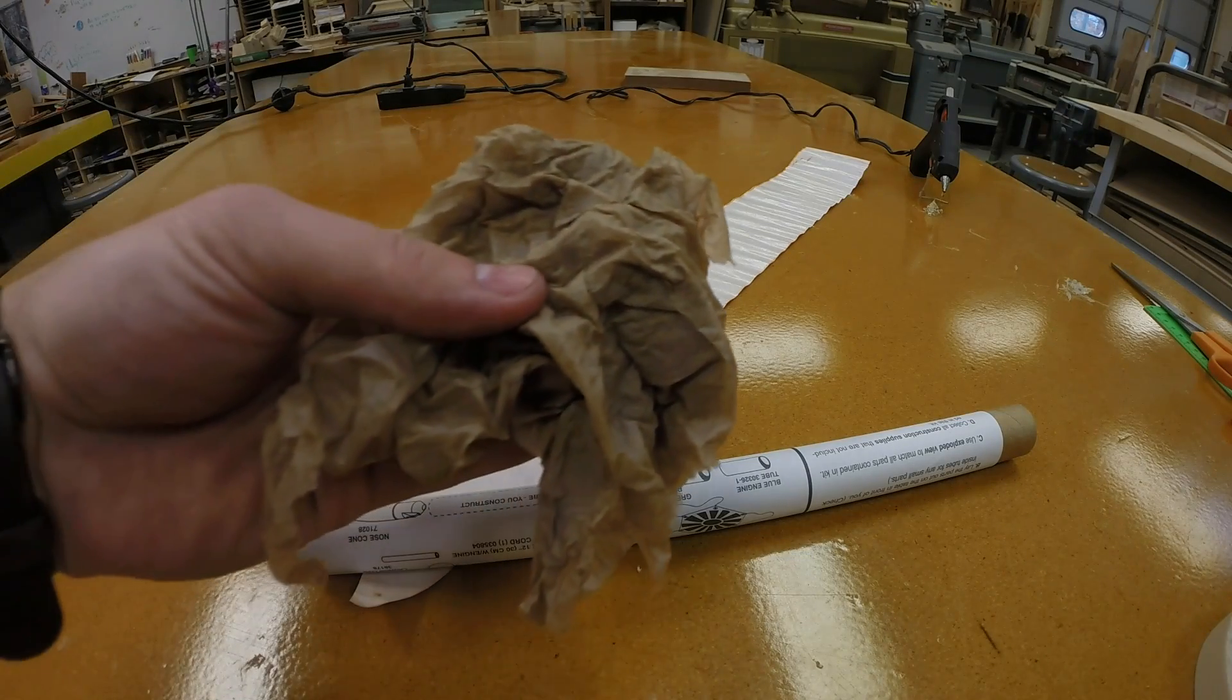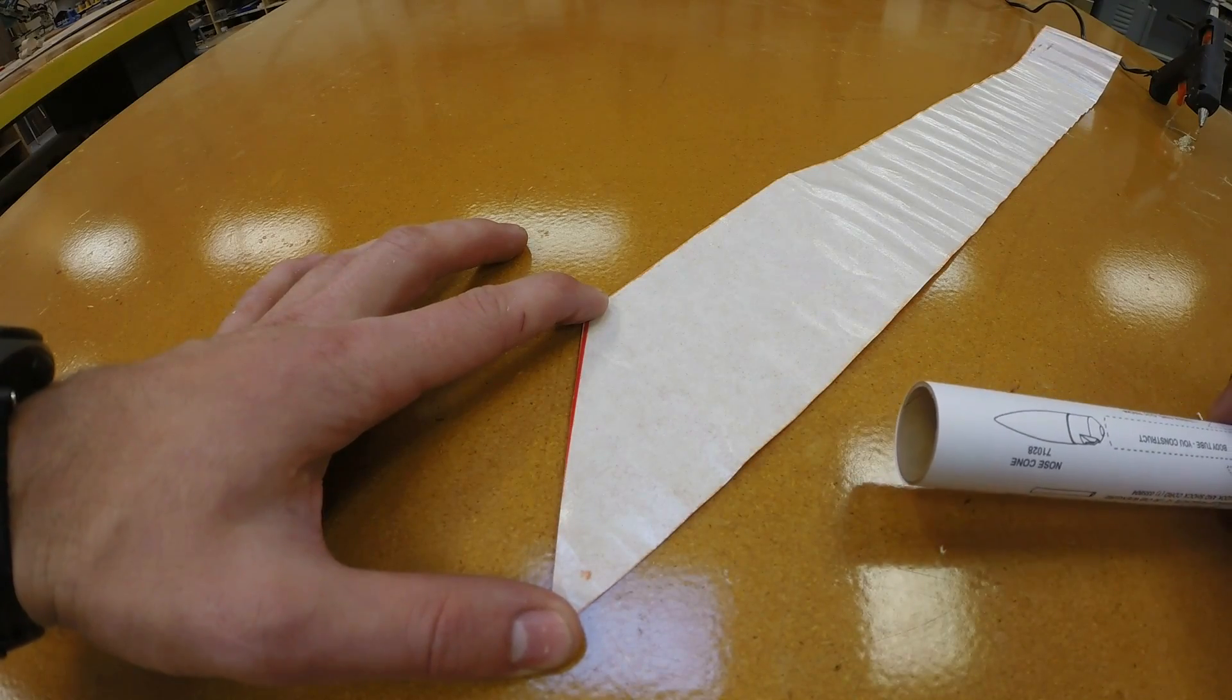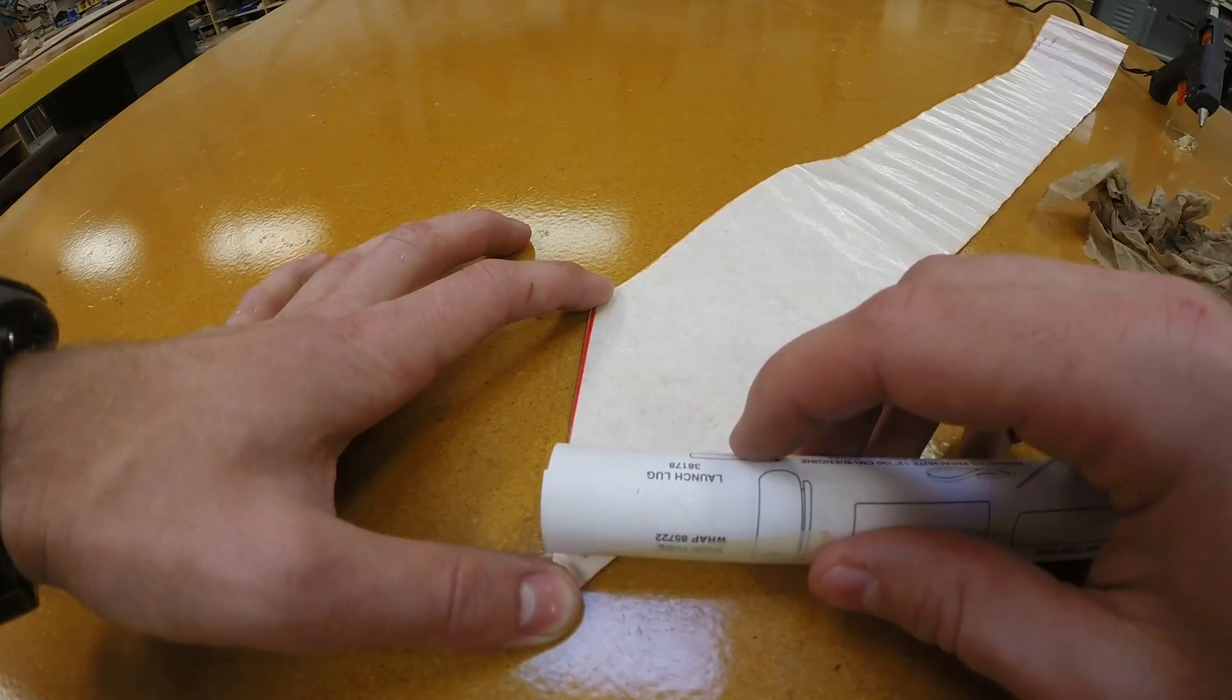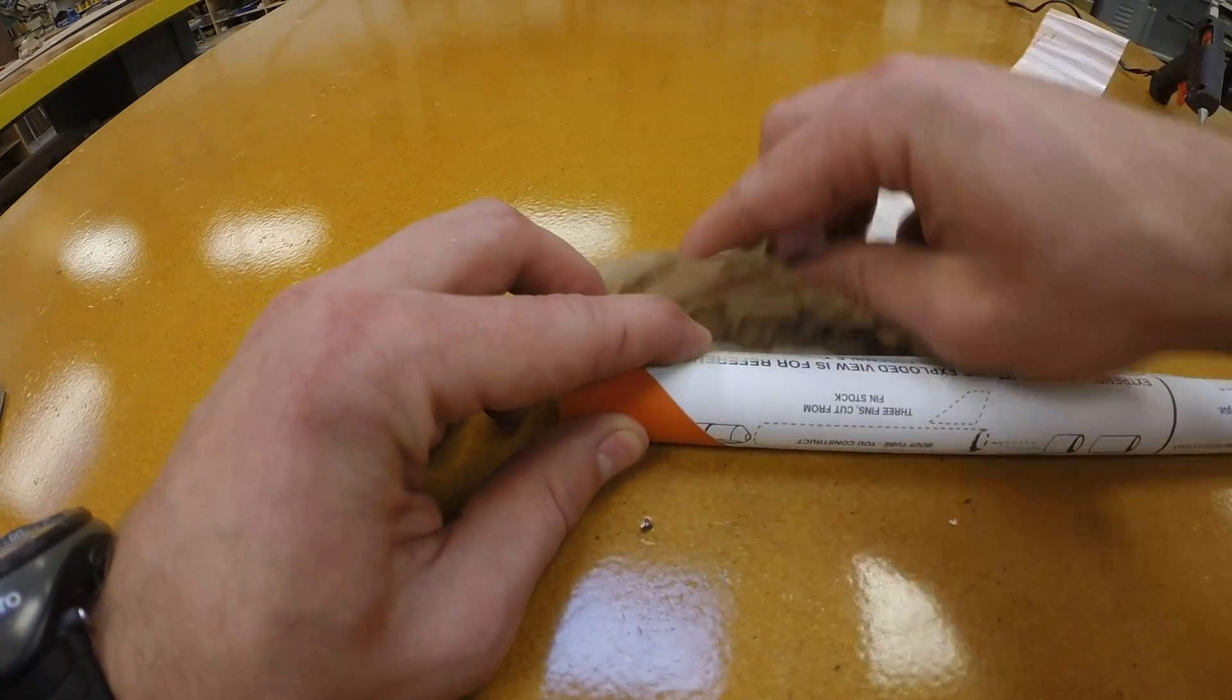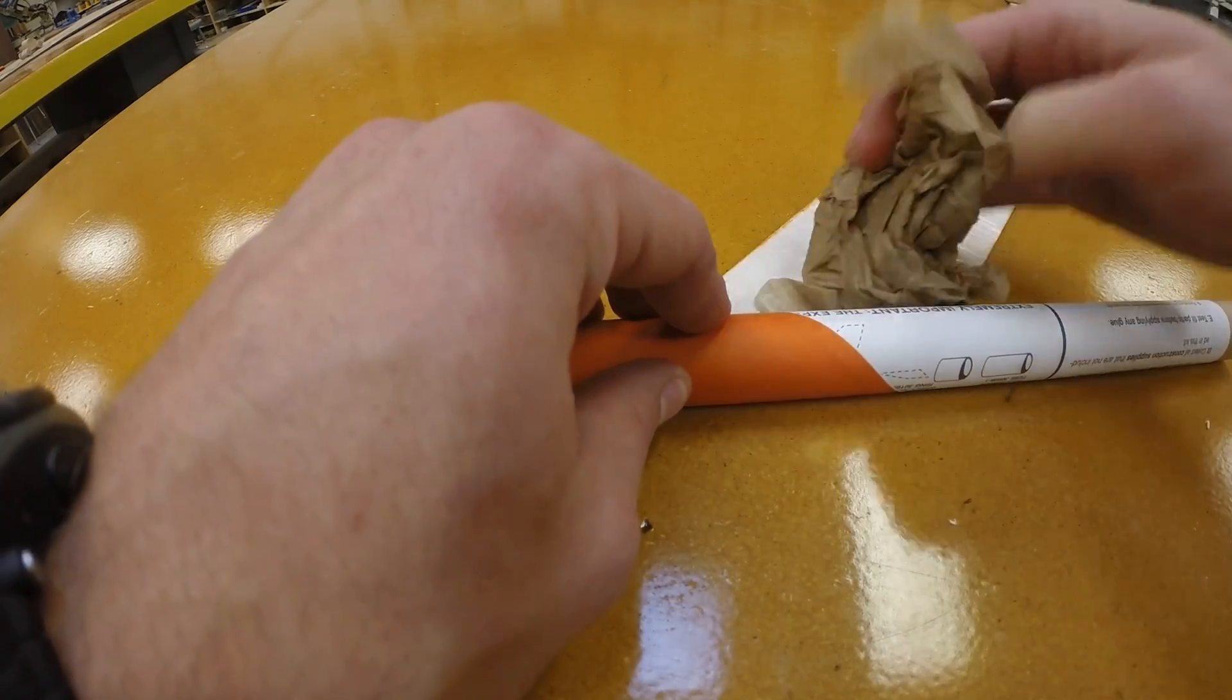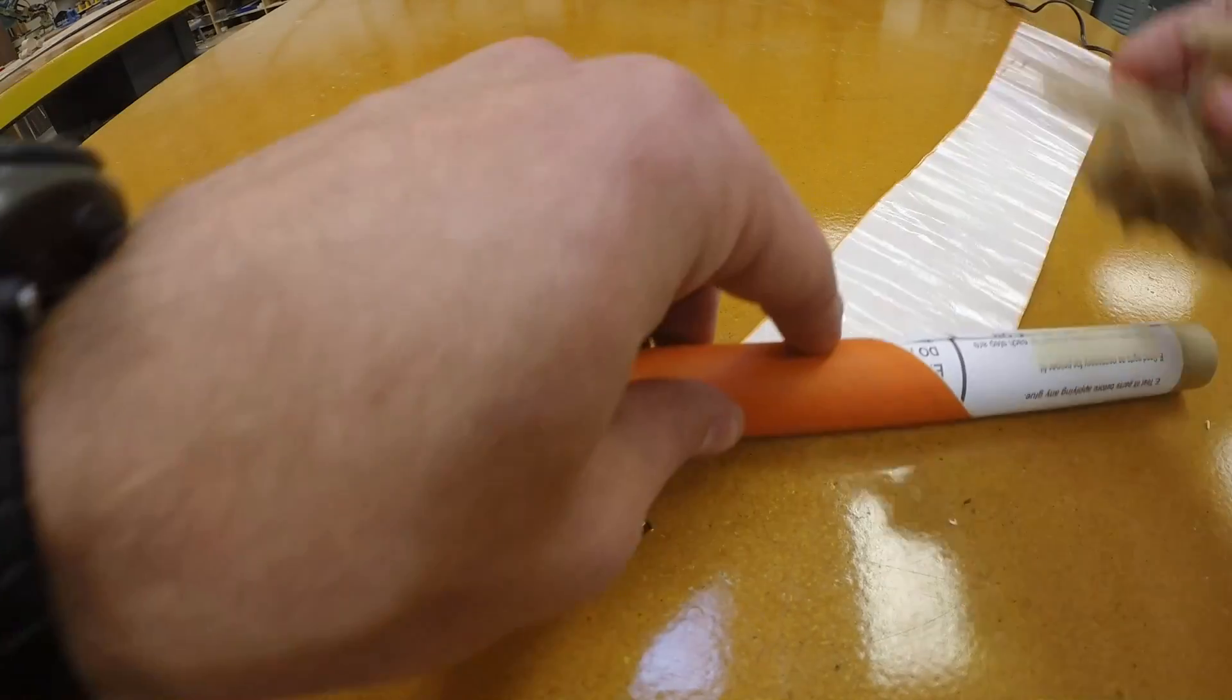Now you only get one shot at this so watch closely. You'll need a damp towel, not dripping but damp, and you're going to roll out one of your strips of body tube like this. Rub the wet towel on the back of it and it's kind of like licking a stamp. It activates the glue that's on the back side. You're going to carefully roll the body tube with the paper on it up the body tube wrap and wet the wrap as you go along.